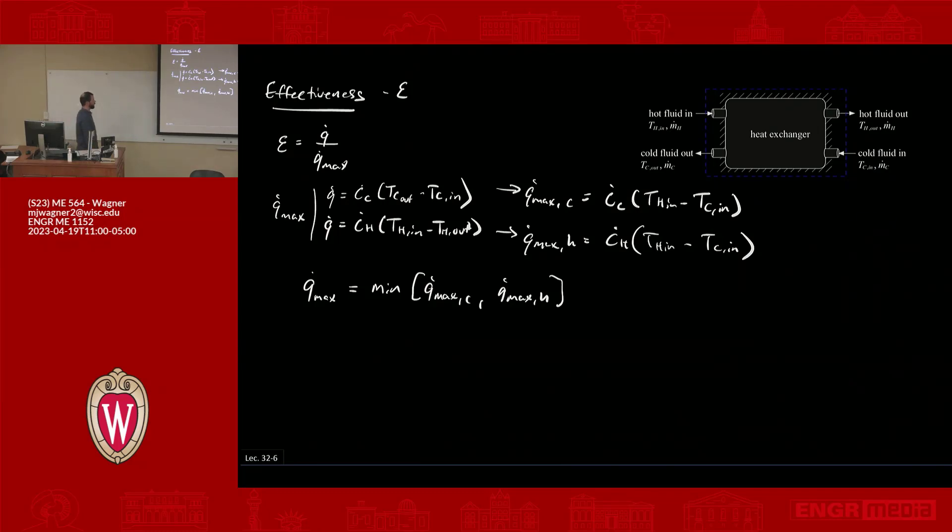I could never exchange more heat than what will get the lower capacitance fluid up to the full temperature difference. So that's Q max. So now I could say, my actual heat transfer and my Q max, which I compute this way, and that gives me the effectiveness.